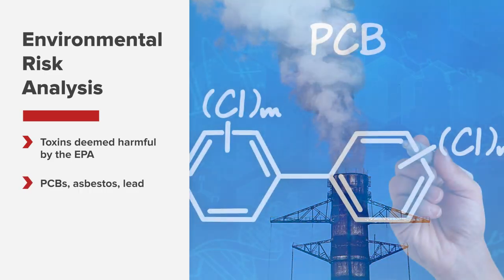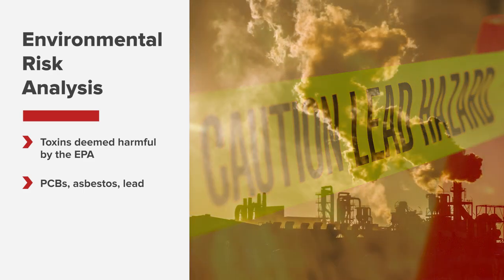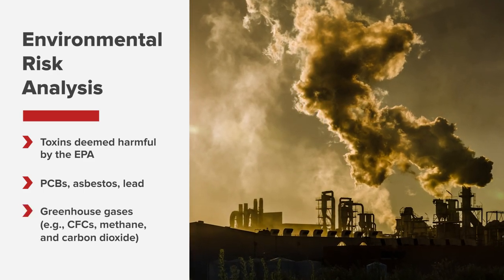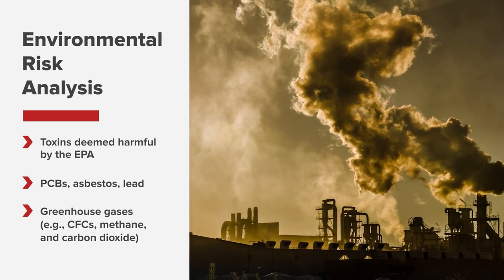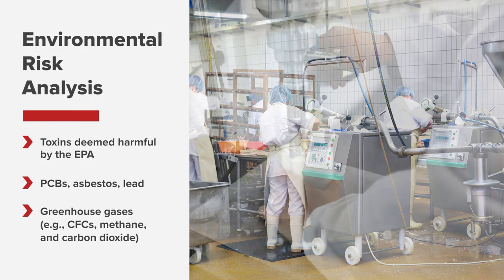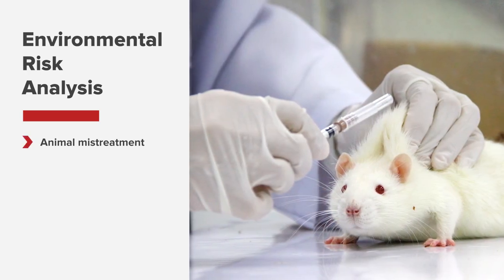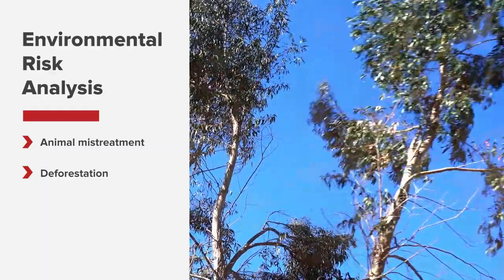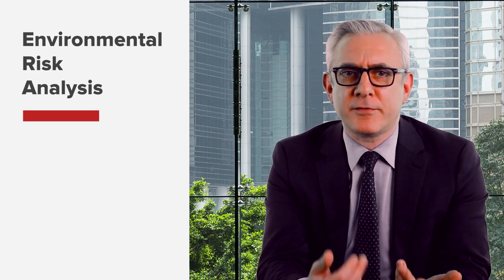For instance, is it involved in any way with PCBs, asbestos, or lead-based paint? Is it responsible for creating pollutants such as greenhouse gases? Is it a chemical manufacturer that uses CFCs, an agricultural company that produces methane, or an energy company that produces carbon dioxide? Is it a food manufacturer, or a cosmetic or pharmaceutical company that experiments on or otherwise mistreats animals? Or maybe it's a company that cuts down trees to manufacture wood-based products or supply timber? If the answer to any of these examples is yes, you may then want to see whether any of these risks could hamper that company's financial performance in the future.